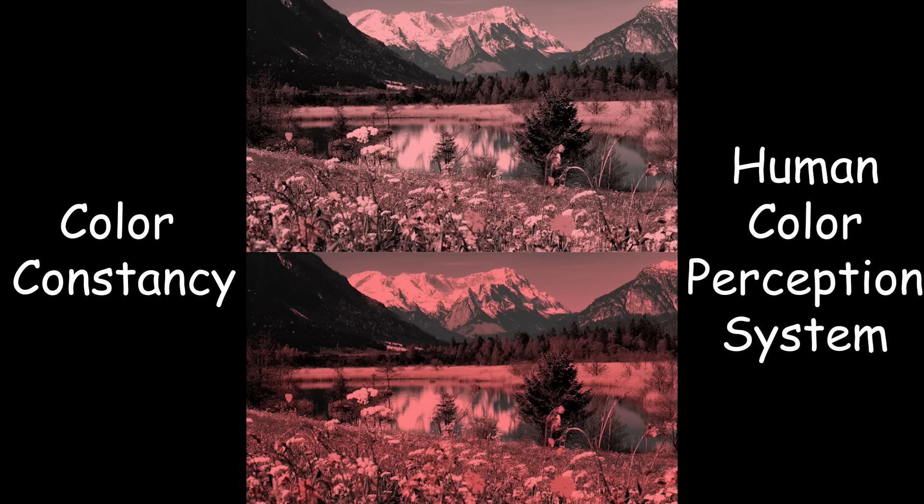Color Constancy. How can you still know what colors the things are in this photo while it is composed of only light and dark shades of red and white? It's thanks to color constancy, a feature of the human color perception system.